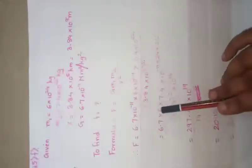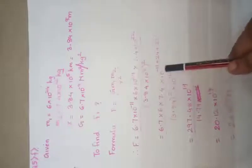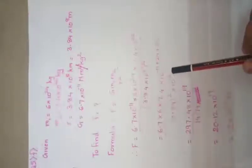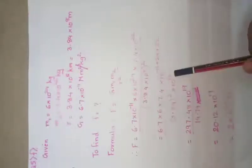We will take all the terms together: 6.7×6×7.4×10⁻¹¹⁺²⁴⁺²² divided by (3.84)²×10¹⁶. 8 times 2 is 16.